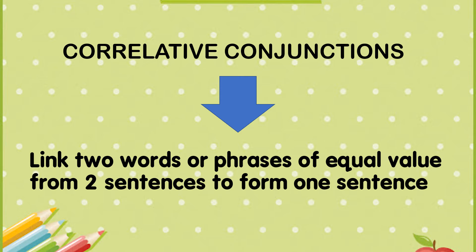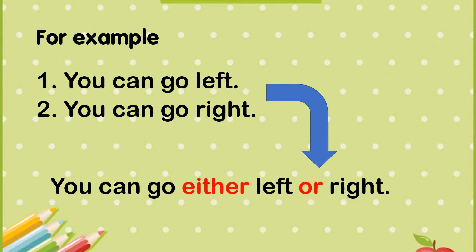Correlative conjunctions link two words or phrases of equal value from two sentences to form one sentence. In Malay: menghubungkan dua perkataan atau fraza yang sama erti daripada dua ayat menjadi satu ayat.